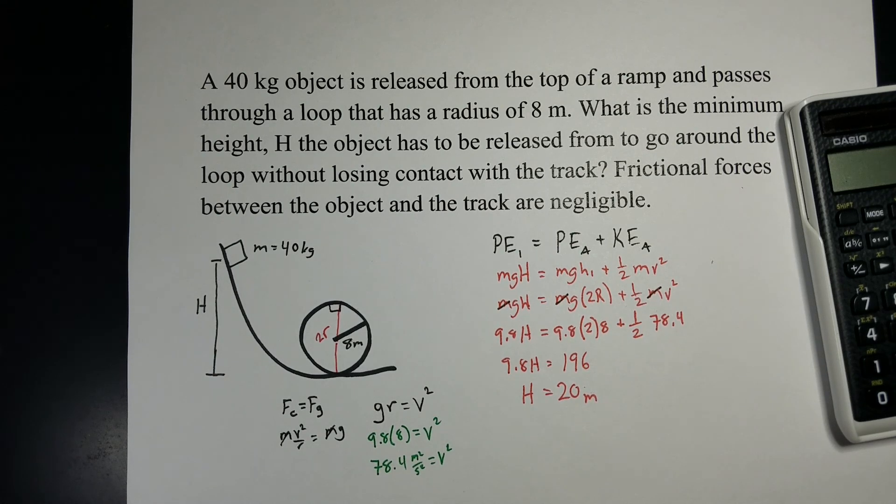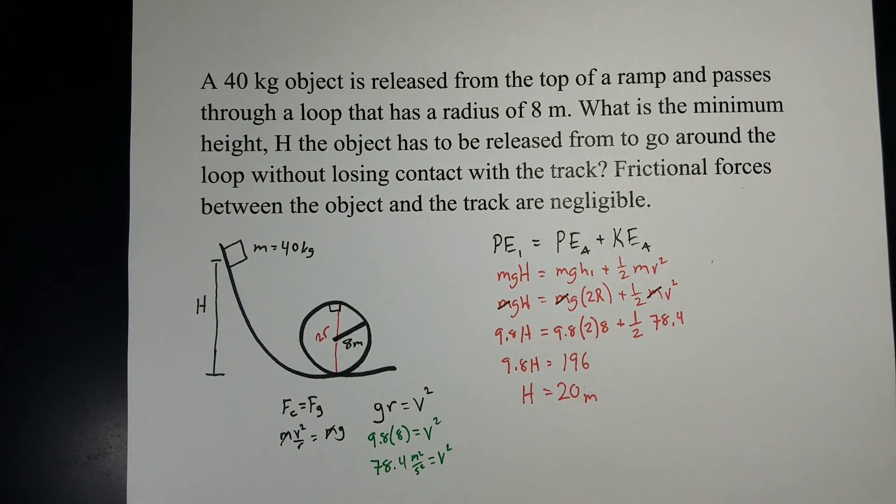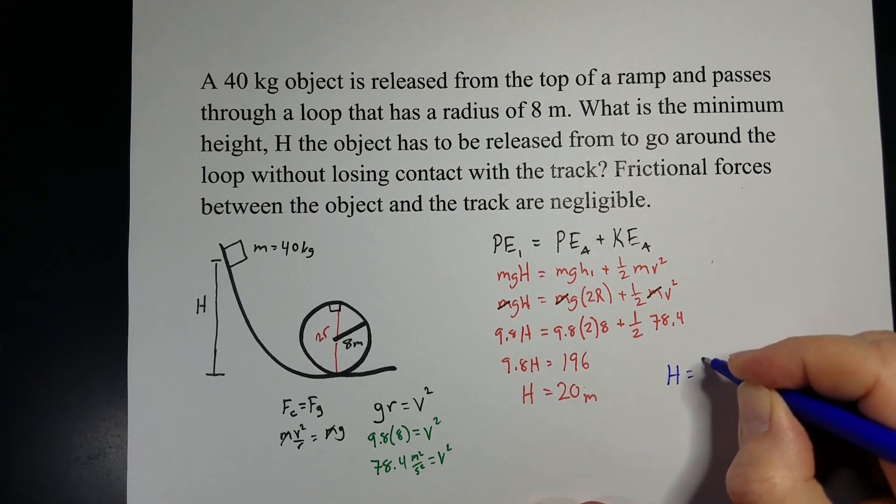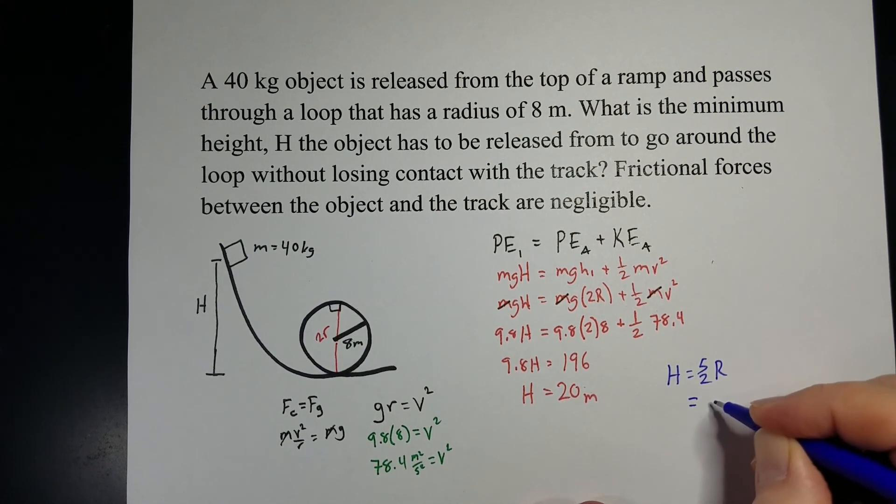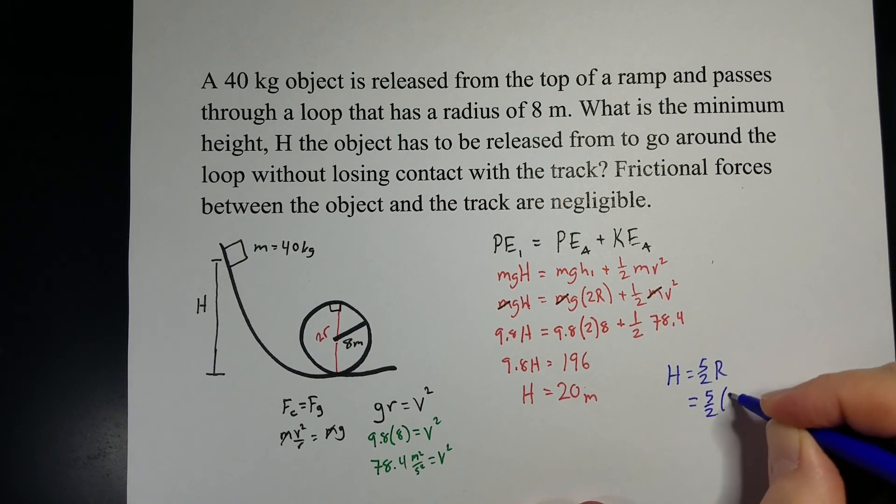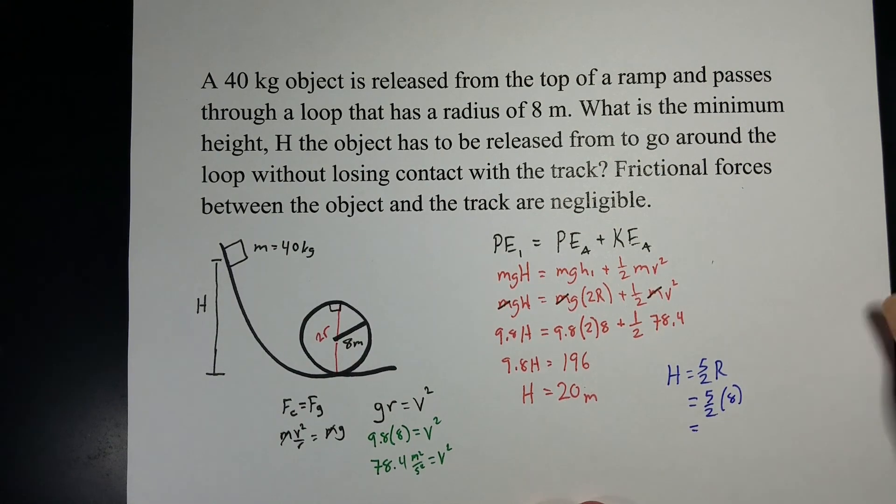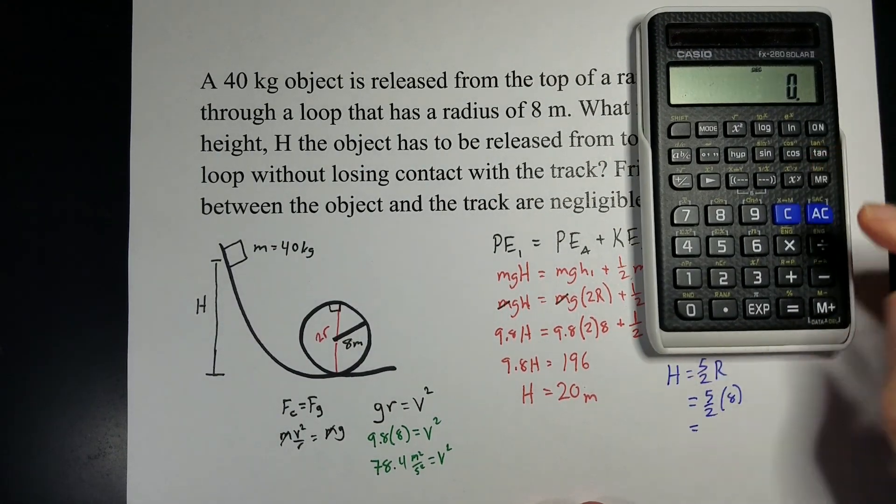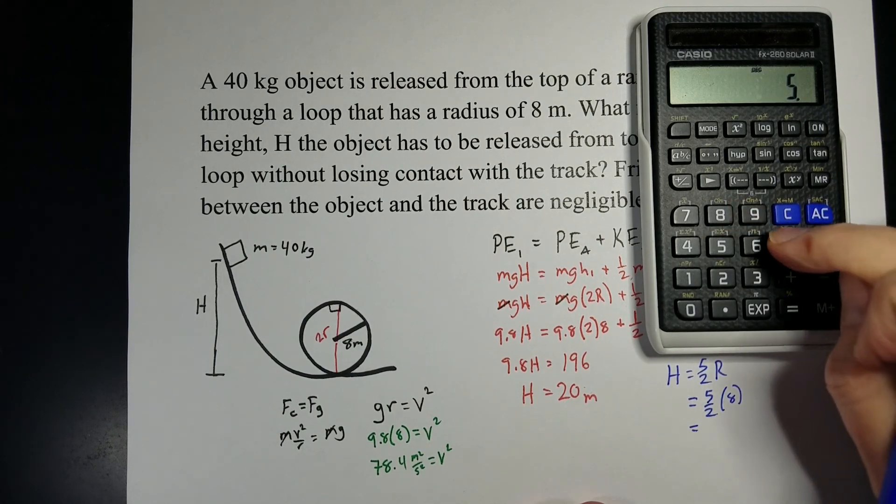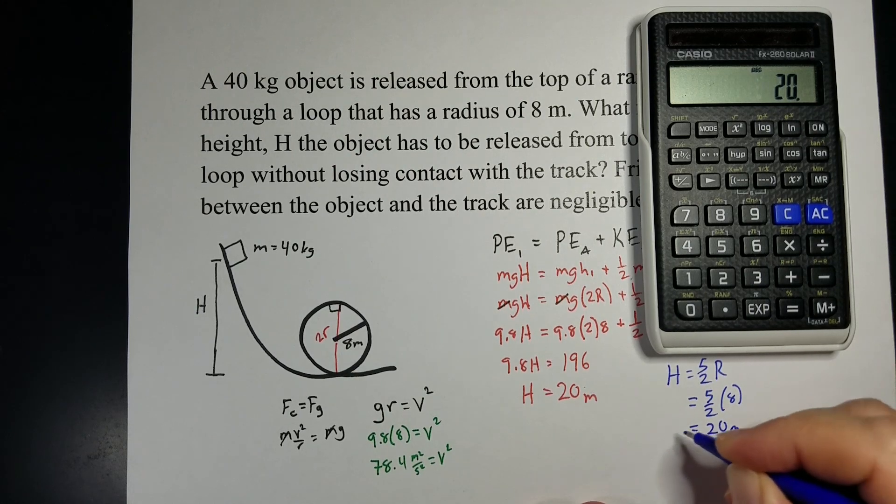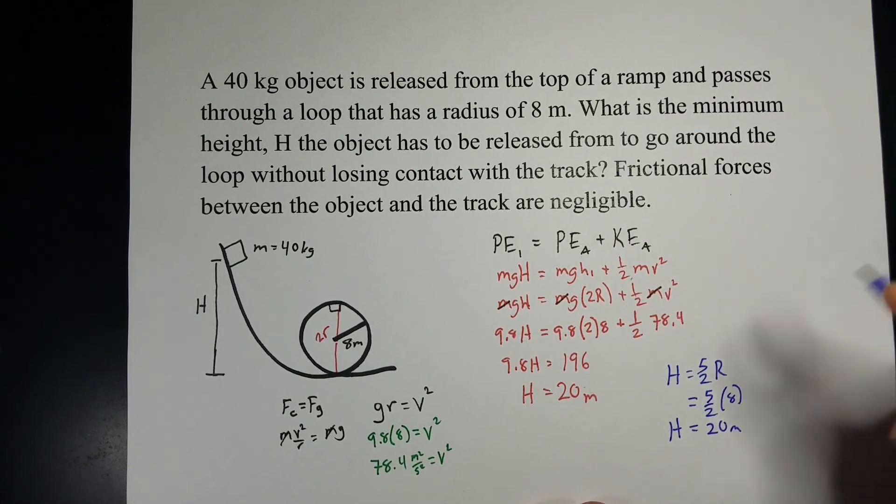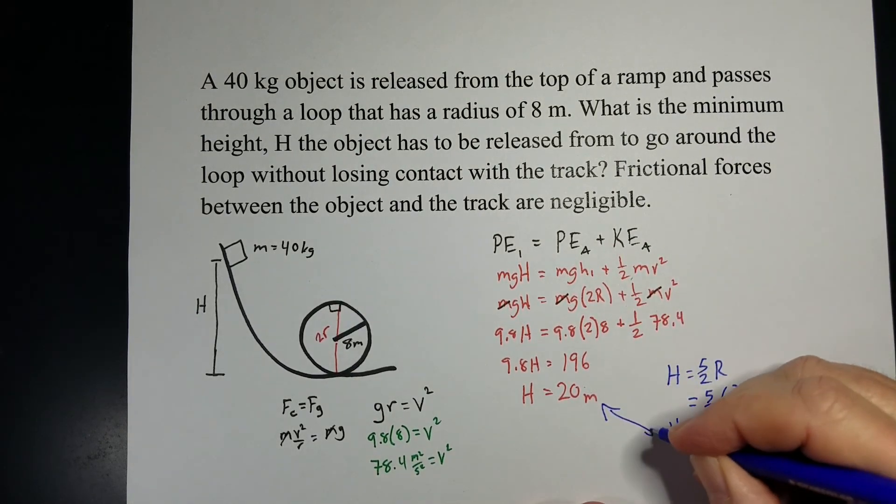Now, in the last problem, we figured out that the height, with no numbers, we figured out the height had to be 5 halves of our radius. Well, let's just double check that. 5 halves, our radius in this case was 8. So, 5 times 8 divided by 2 gives me 20 meters. The exact same answer we figured out there.